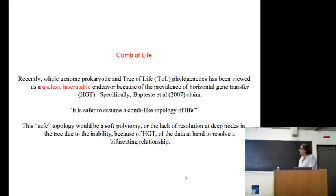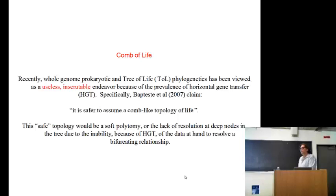And they say in this paper, to sum up our arguments thus far in a single sentence, the belief in the existence of a universal tree of life inclusive of prokaryotes is stronger than the evidence from genomes to support it. And, in fact, these researchers say that we should be thinking about the tree of life as a comb of life. And I used a sentence from a review of a paper that I was a co-author on to express this sentiment. Recently, whole genome prokaryotic tree of life phylogenies has been viewed as a useless, inscrutable endeavor, basically because that's the endeavor that I tried to get published.